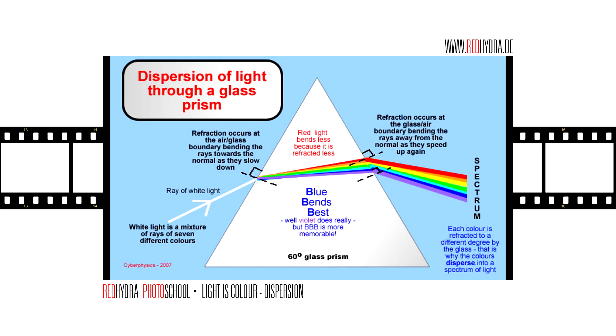All this happens because each color is refracted to a different degree by the glass, and that is why the colors are dispersed into a spectrum of light. It has to do with the index of refraction.